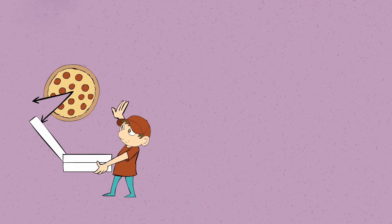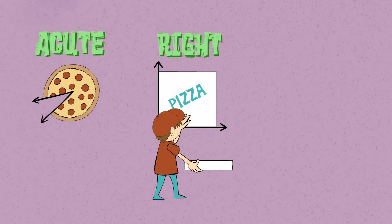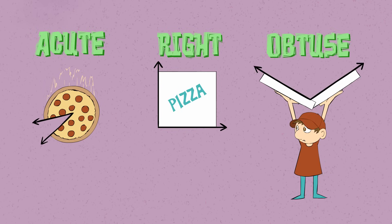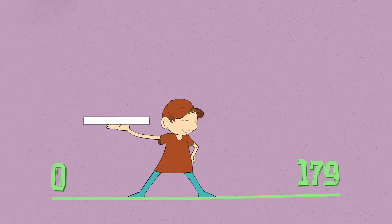Angles are measured in degrees, and here's how to remember them with ease. From 90 to 180, an angle is obtuse.